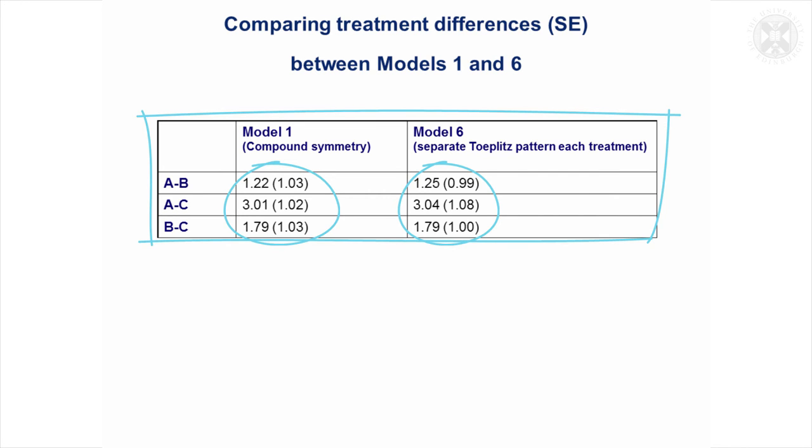So really the results, the overall conclusions are going to be exactly the same. The results are quite similar. The only thing you'll probably notice is that the standard errors in the brackets are a bit different, and that's because this Model 6 allowed a separate pattern of covariances for each treatment, and I think A and C on the whole had higher variances than treatment B.